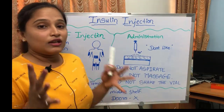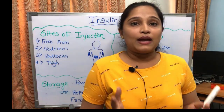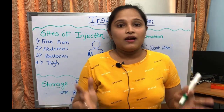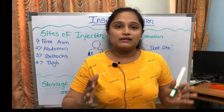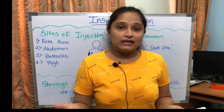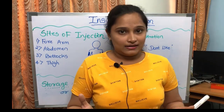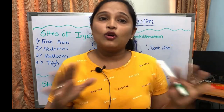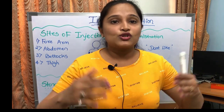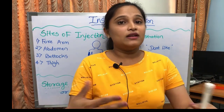First of all, insulin has to be given in type 1 diabetes mellitus. Type 1 diabetes mellitus is a type which is seen after the age of 30 years, in which there is no production of insulin. So we have to give insulin as an injection.